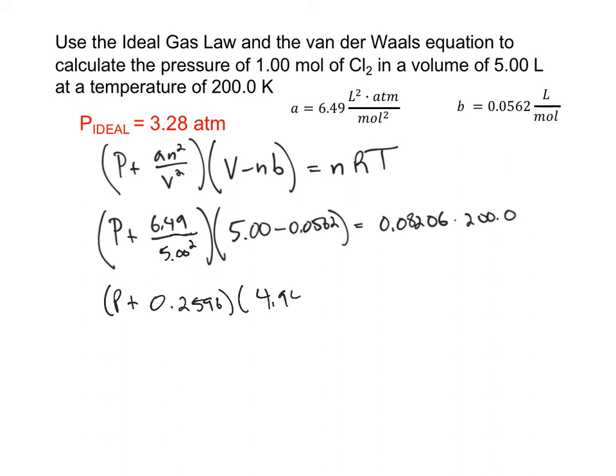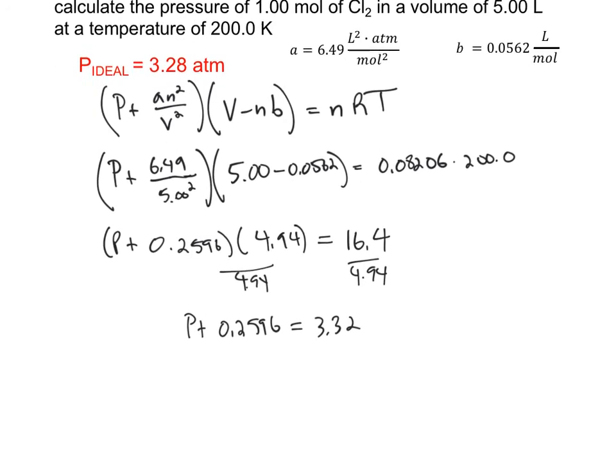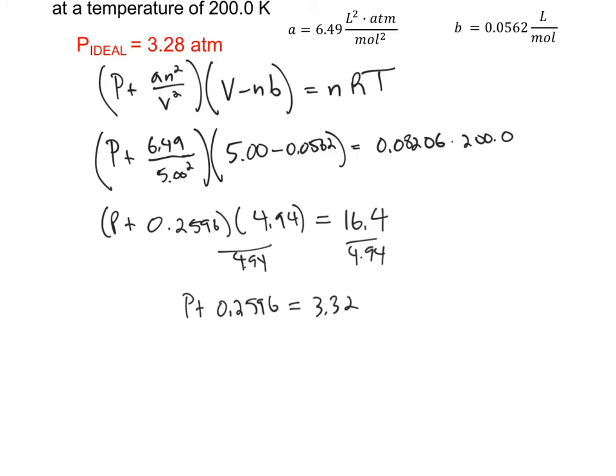Then we get 4.94, the right hand side multiplies out to be 16.4. So now I want to divide both sides by 4.94 and then subtract. So with the van der Waals equation, the pressure we get is 3.06 atmospheres.